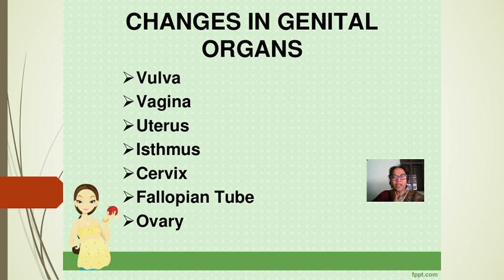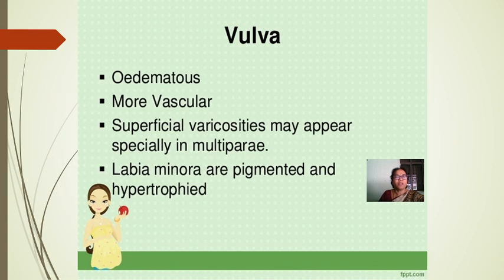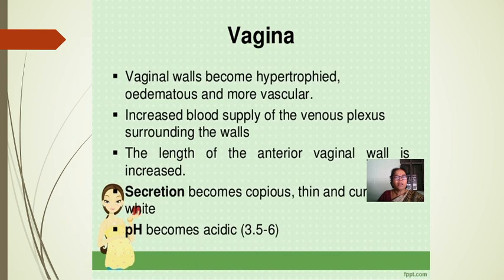Let us see changes in genital organs: vulva, vagina, uterus, isthmus, cervix, fallopian tube, and ovary. Relating to the vulva — it becomes edematous, more vascular, and superficial varicosities may appear, especially in multipara. Labia minora are pigmented and hypertrophied, all more visible in multipara.